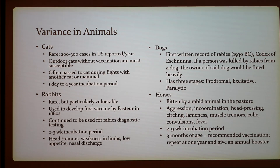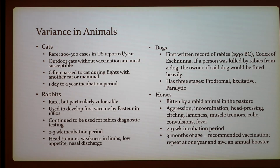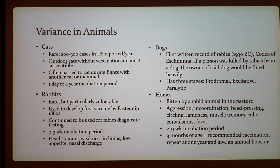For rabbits, rabies is also rare, but they are particularly vulnerable. Pasteur used rabbits for the first vaccine developed in the 1880s, and they continue to be used for rabies diagnostic testing. The incubation period is two to three weeks — likely short because there is less distance for the virus to travel. Symptoms include head tremors, limb weakness, low appetite, and nasal discharge.